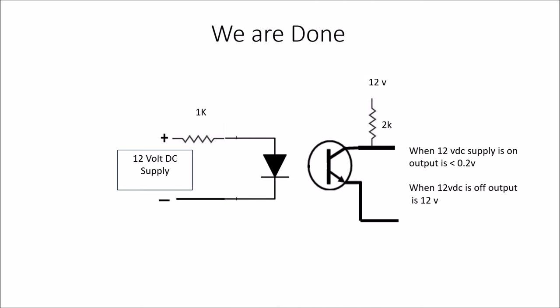So we're done. This is the circuit we came up with. Pretty simple. When the 12-volt supply is on, powering the emitter, the light emitting diode, we should have very close to 0 volts, less than 0.2 volts. And when the 12-volt supply is off, our output should get pulled up to 12 volts.